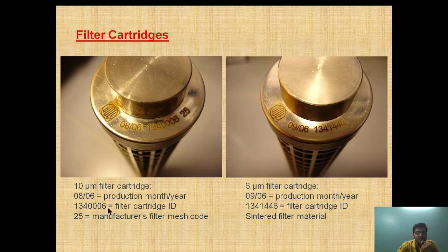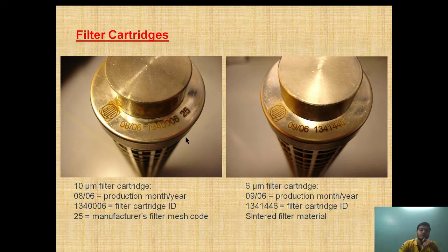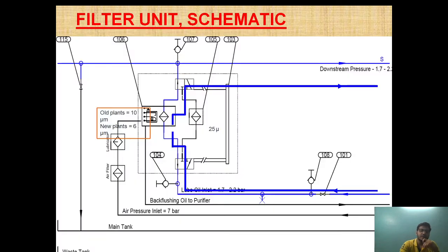As you can see, this is the filter cartridge number, and this is the manufacturer's filter mesh code. There is also a filter cartridge number here. So there is a difference in the filtration micron filter cartridge between the old and new versions.